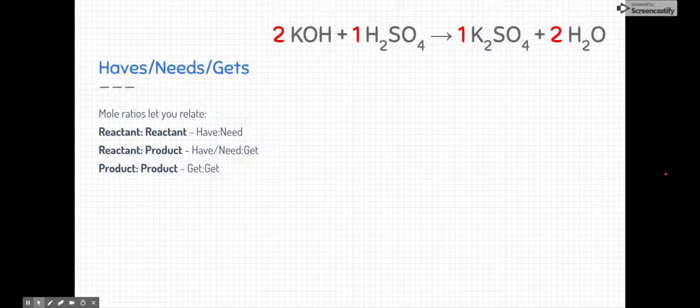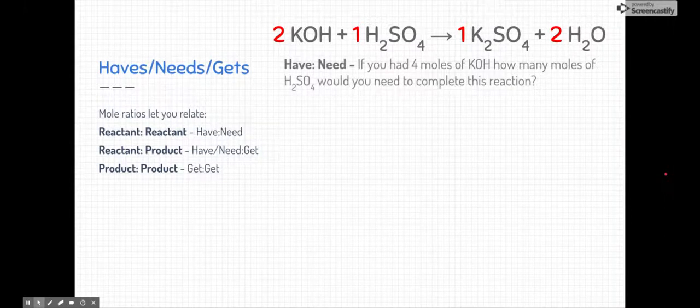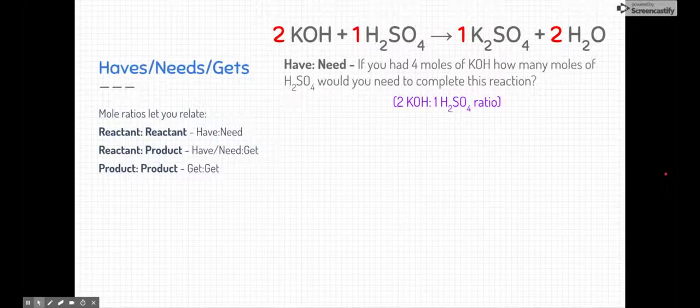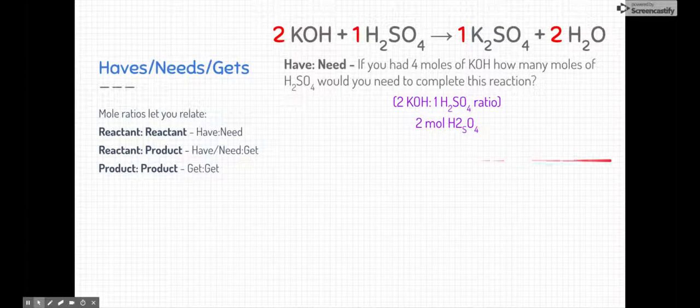Bringing back to this chemical reaction and talking about stoichiometry again, these molar ratios let us know the haves, the needs, and the gets. They help us compare reactants to reactants, reactants to products, and two products or more. For example, let's talk about the haves and the needs. What if we had four moles of potassium hydroxide? How many moles of sulfuric acid would you need in order to complete this reaction and use all those moles? Knowing the molar ratio, if we know that it's a two-mol potassium hydroxide to one mole sulfuric acid ratio, then it makes it quite easy. It's just two moles of H2SO4.